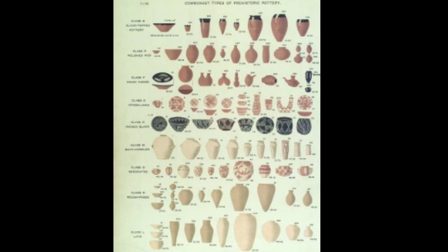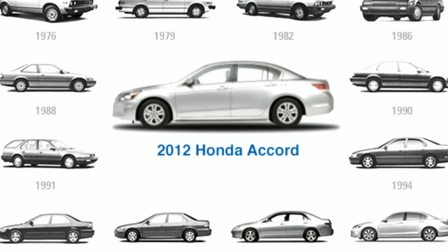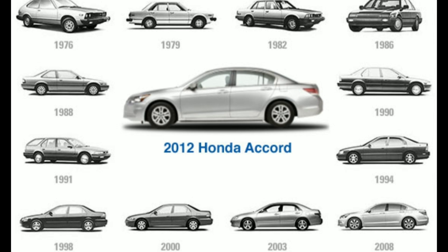Archaeologists examine artifacts and notice how different styles are common or trendy at different times. While one style may be popular at one point, it likely will have been less popular later. The more popular a style is, the more examples archaeologists will find. For instance, the Honda Accord shows how the style of the 1982 model slowly changed into the style of the 2012 model.